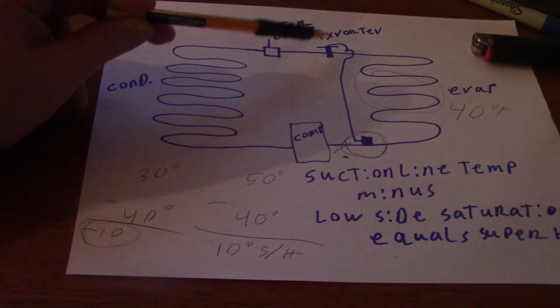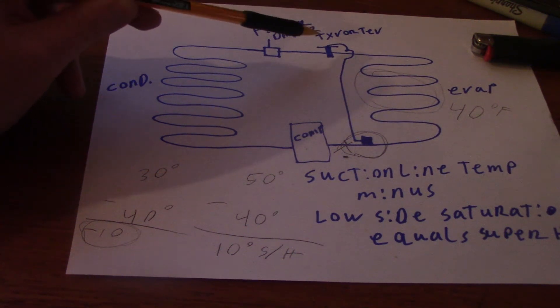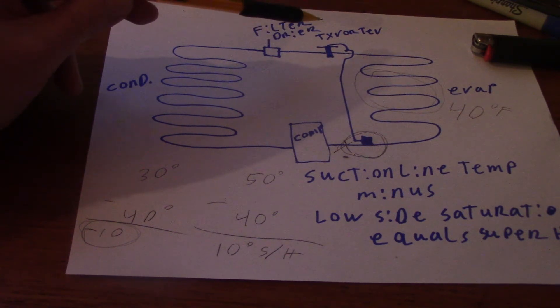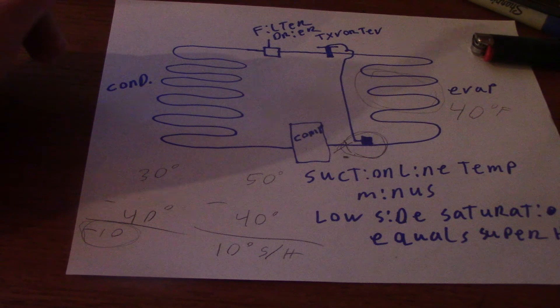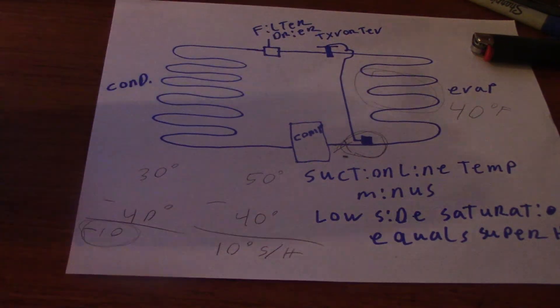I'll give you a little tip here. If you have too high of superheat with a TXV, either A, the screen's clogged up, or B, the TXV is malfunctioning, and it just can't adjust to add the refrigerant here.